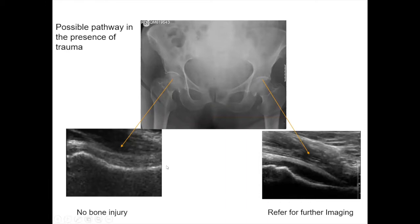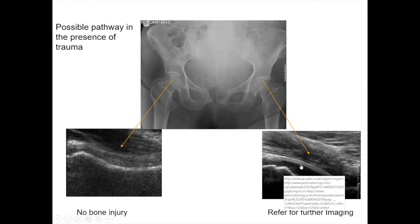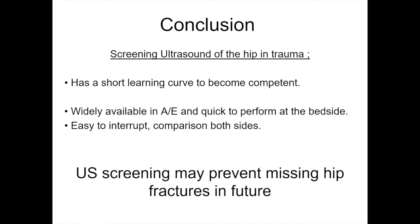Here's a possible pathway: on one side, no fluid within the hip suggests no bone injury; on the other side, fluid is present, and in the presence of trauma you'd suspect a fracture and refer for further imaging. Conclusion on ultrasound of the hip in trauma: it has a very short learning curve, the anatomy is extremely simple, A&E already has bedside ultrasound, it's easy to interpret, you can compare both sides, and it may prevent patients being sent home with a hip fracture.